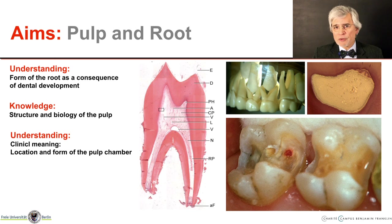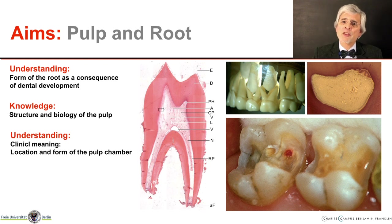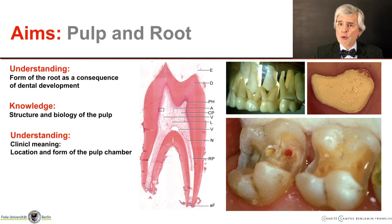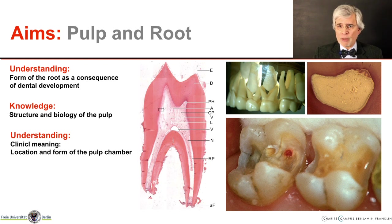This lecture deals with the pulp and the root. We are dealing with both topics in one lecture because they are closely related in terms of their development and also anatomically. As learning objectives, we want to create an understanding of the shape of the root as it results as a consequence of tooth development. It is about the structure and the biology of the pulp, and we want to gain an understanding of the clinical significance that results from the position and shape of the pulp cavity.